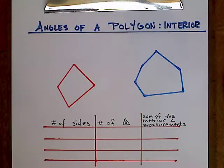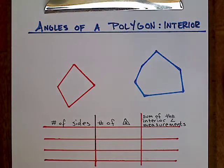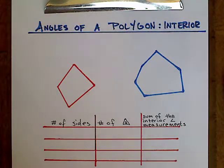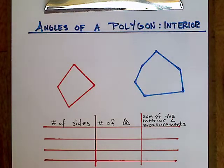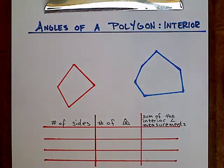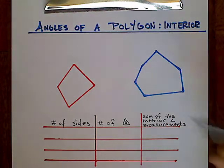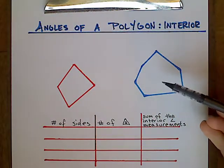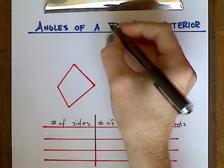To find the sum of the interior angles of a polygon, we first need to make sure we know which type of polygon we are talking about. So here we have two polygons. They both share the same property — they both happen to be convex polygons.